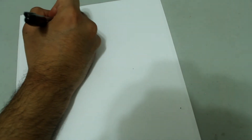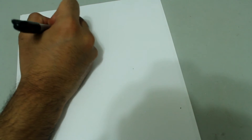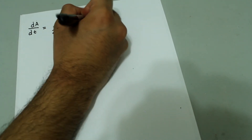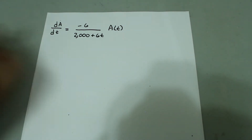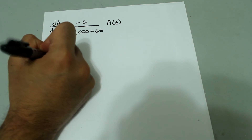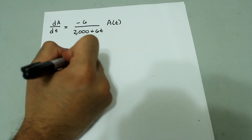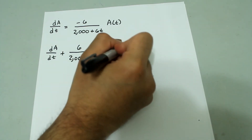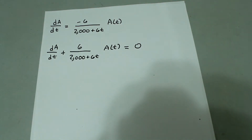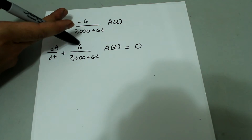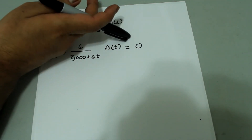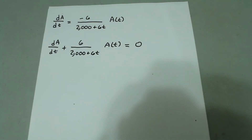Rewriting on another page: da over dt equals negative 6 over (2000 plus 6t) times a of t. This is a linear differential equation. We can rewrite it in standard form: da over dt plus 6 over (2000 plus 6t) times a of t equals 0. The coefficient on da over dt is 1, the coefficient on the a term is a pure function of t, and the right-hand side is 0. So now we need to find the integrating factor.